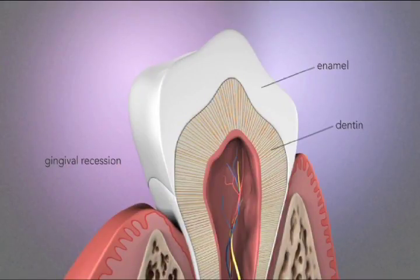Gingival recession is the primary way in which dentin is exposed in the cervical region of the tooth.